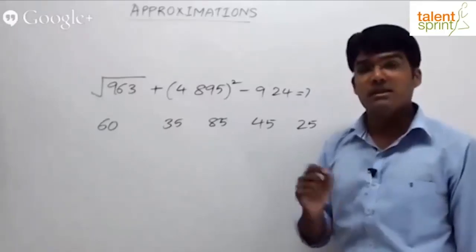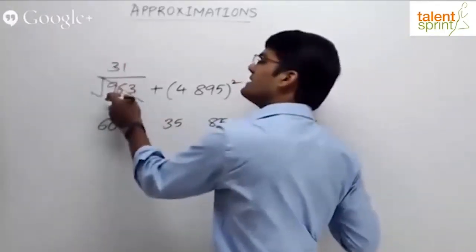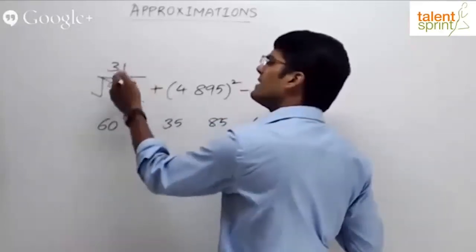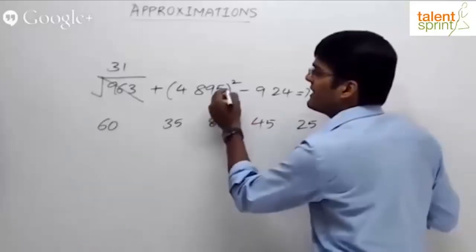Yes or no? 961 is 31, 963 can be taken as close to 31. 4.895, can you take it as 5? Approximately 5 squared is 25. Minus 9.24, let's take it as 9 or 9.5, whatever it is.